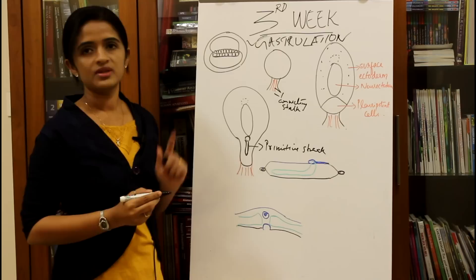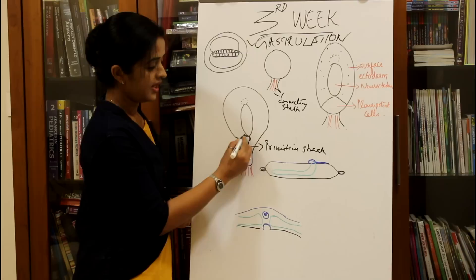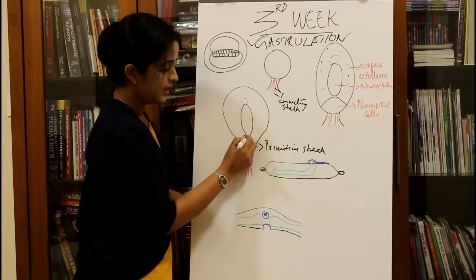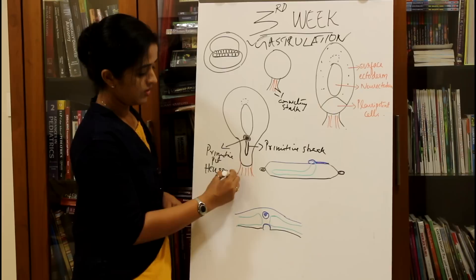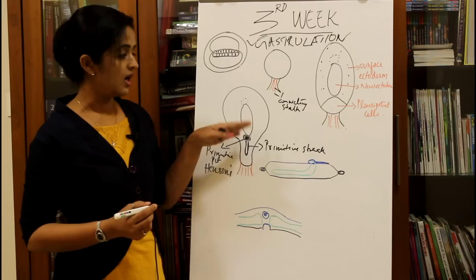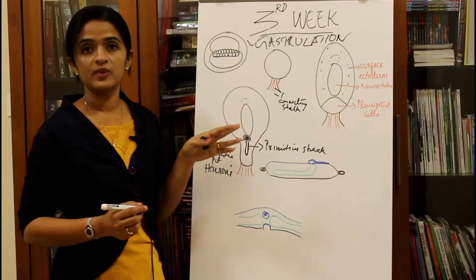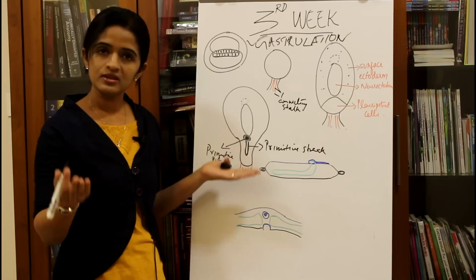The primitive streak is a thickening seen in the epiblast towards the caudal end. It has a node-like thickening towards the cephalic end called the primitive node, which develops a pit in the center called the primitive pit or Hensen's node. The cells from the primitive streak lying in the midline between the epiblast and hypoblast form the notochord, while cells on either side form the intraembryonic mesoderm.